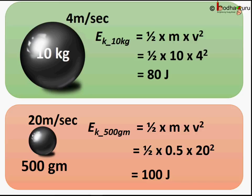Now, putting these values in the formula of half mv square, we get this is equal to half multiplied by 0.5 multiplied by 20 square and this becomes equal to 100 joules.